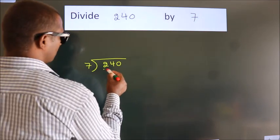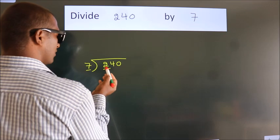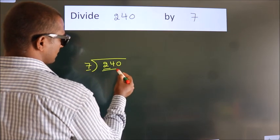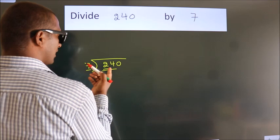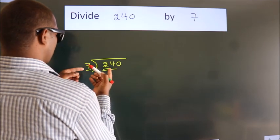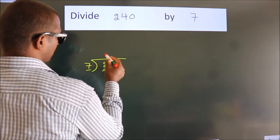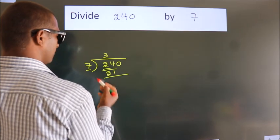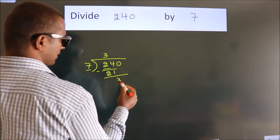Here we have 2. Here 7. 2 is smaller than 7, so we should take 2 numbers, 24. A number close to 24 in the 7 table is 7 times 3, which is 21. Now we should subtract. We get 3.